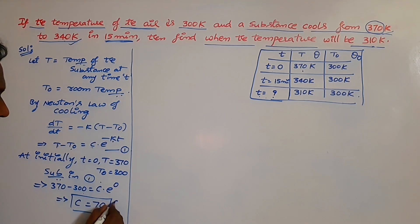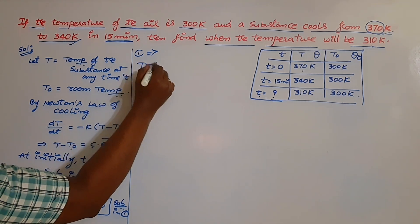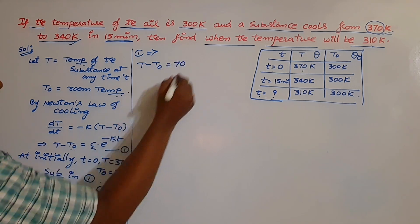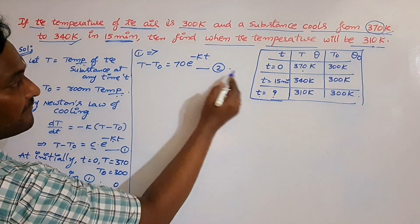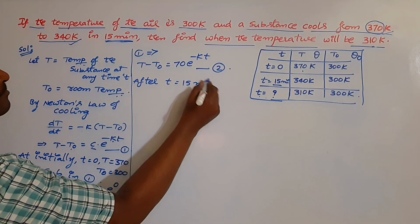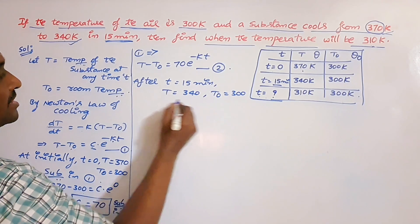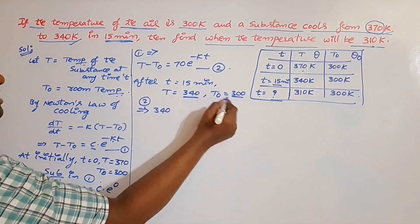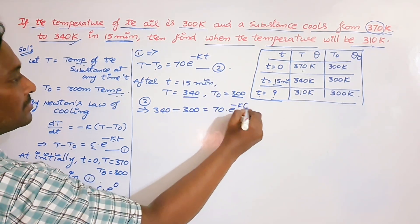So substitute C = 70 into equation 1. The new equation becomes: T − T₀ = 70 · e^(−Kt). Call this equation 2. Now to find K, use the condition: after time t = 15 minutes, temperature is 340 Kelvins and room temperature is 300 Kelvins. Substitute into equation 2: 340 − 300 = 70 · e^(−15K).